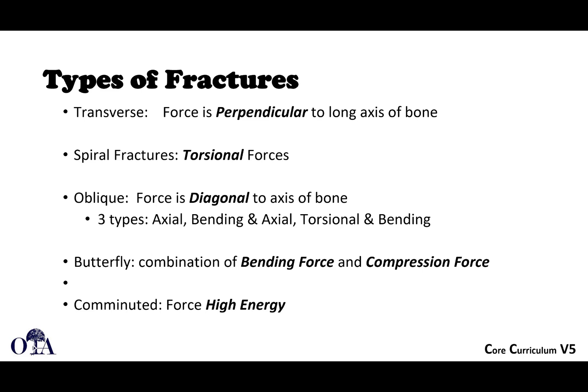There are different types of fracture patterns. In a transverse fracture, the force is perpendicular to the long axis of the bone. In a spiral fracture, it's due to torsional force. An oblique fracture occurs when the force is somewhat diagonal to the axis of bone — there are three types: axial bending, axial torsional, and bending. A lot of oblique fractures will occur due to compression loads.